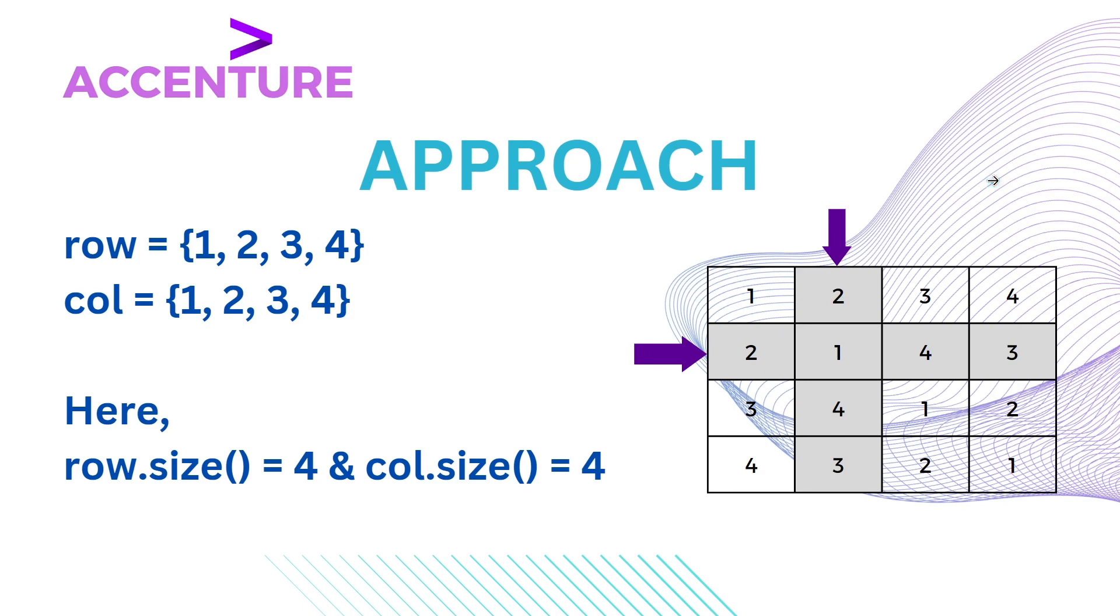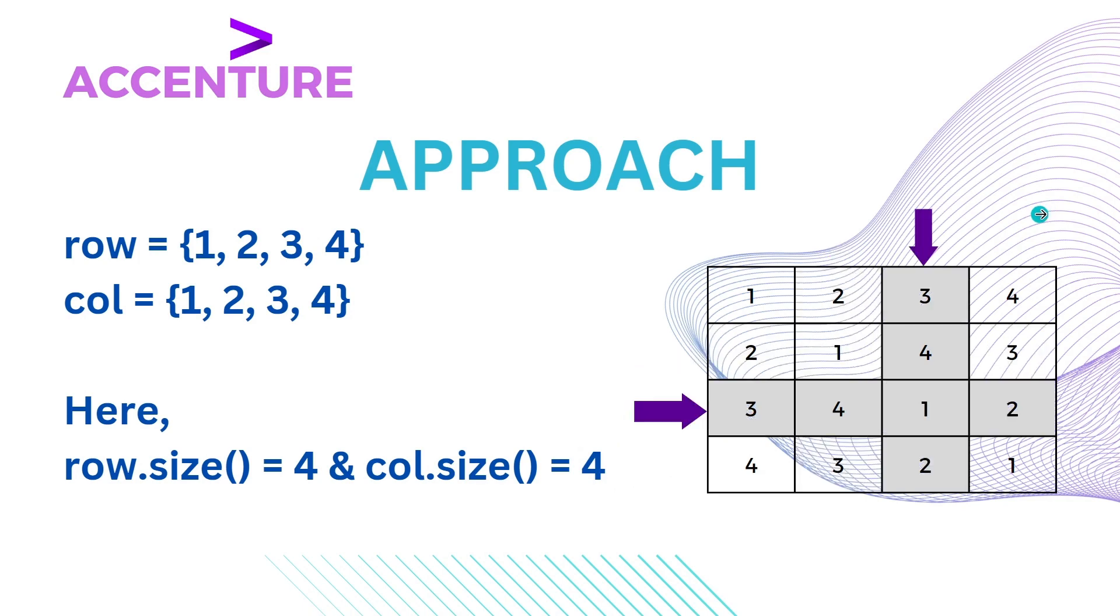Now in the second row and column we can see that both the sets contain numbers from 1 to 4, meaning that their size is equal to 4, thus moving to the third row and column.